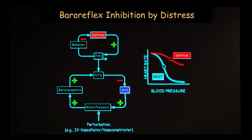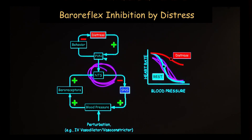This is really key for understanding blood pressure changes during stress. Because of higher centers such as the hypothalamus having altered activity, the barostat essentially gets reset. You move to a different curve, so blood pressure is higher and heart rate is higher. Ordinarily, because of the baroreflex, if blood pressure goes up, heart rate goes down — but that does not happen during distress.